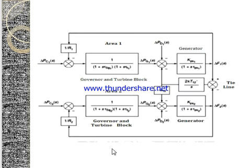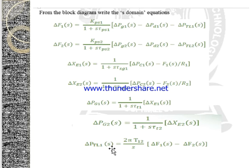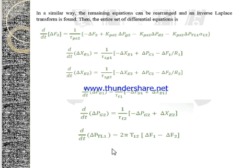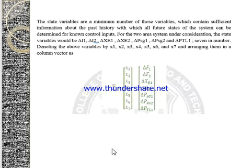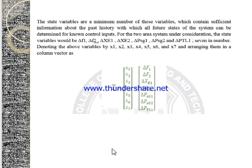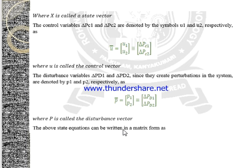While writing the equations from this diagram, we get all these transfer functions. By taking the inverse Laplace transforms of the above equations and then obtaining the derivatives d(ΔF1)/dt and d(ΔF2)/dt, we can write the equations for the standard state variable model. Here we have ΔF1, ΔF2, ΔXe1, ΔXe2, ΔPg1, ΔPg2, and ΔPtl1 — so we are considering 7 state variables and deriving those equations in matrix form.